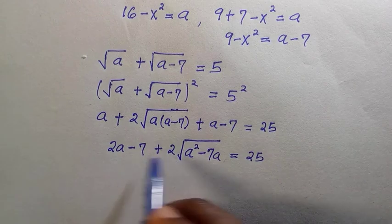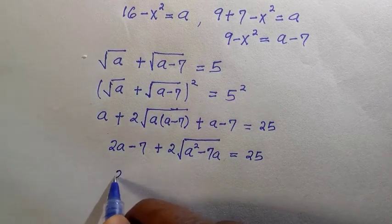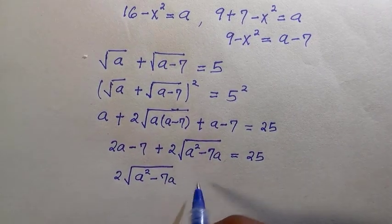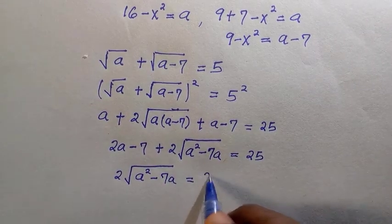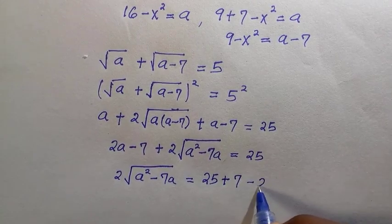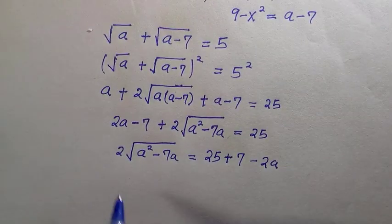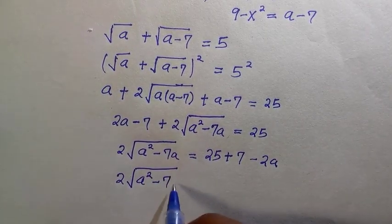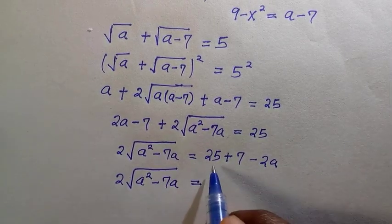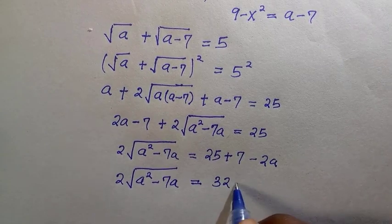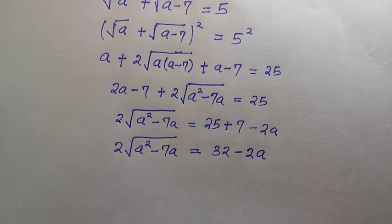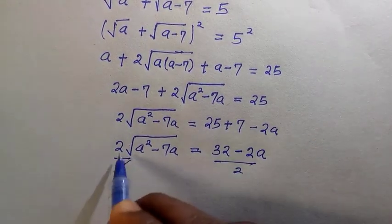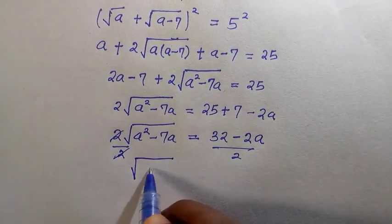From this, if I transfer 2a minus 7 to the other side, we get 2 root of (a squared minus 7a) equals to 25 plus 7 minus 2a. Then by factorizing and dividing everything by 2, we isolate the radical term.